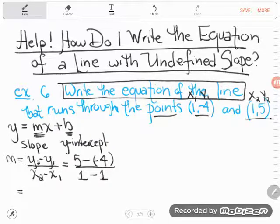And really quickly, you ought to be able to see where my issue is. Up here, of course, subtracting a negative becomes addition, and 5 plus 4 is 9, but down here, there's the problem. 1 minus 1 is 0, and I hope you remember that we cannot divide by 0.